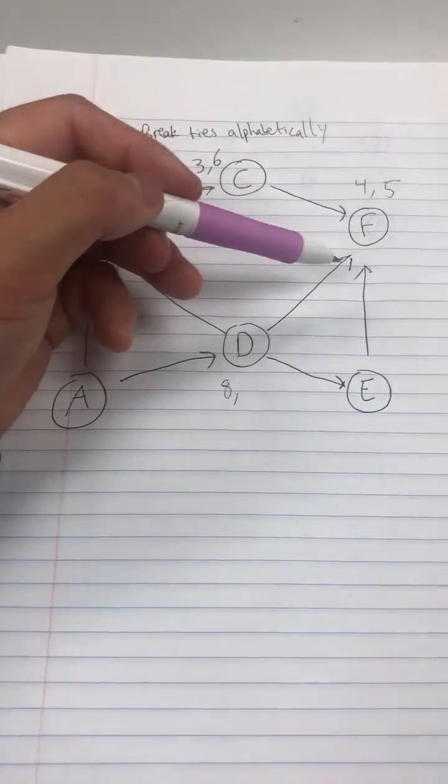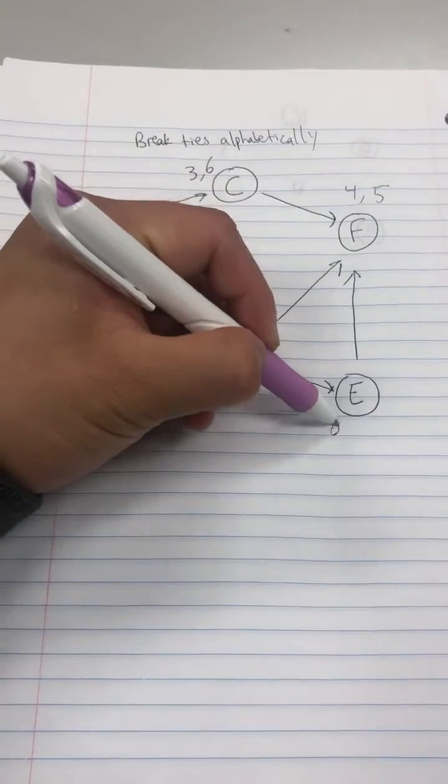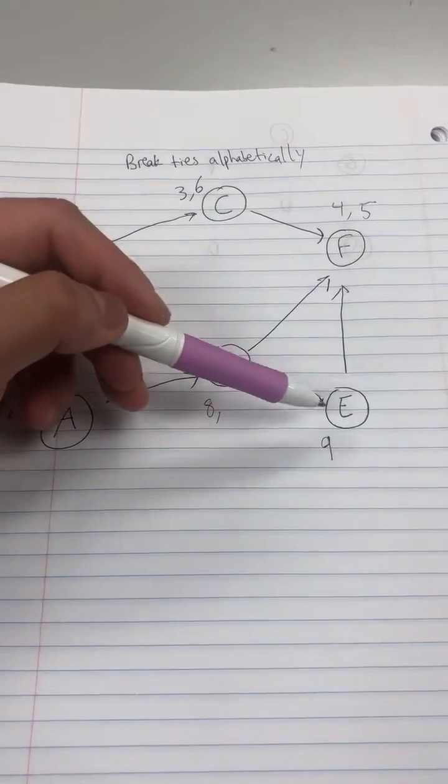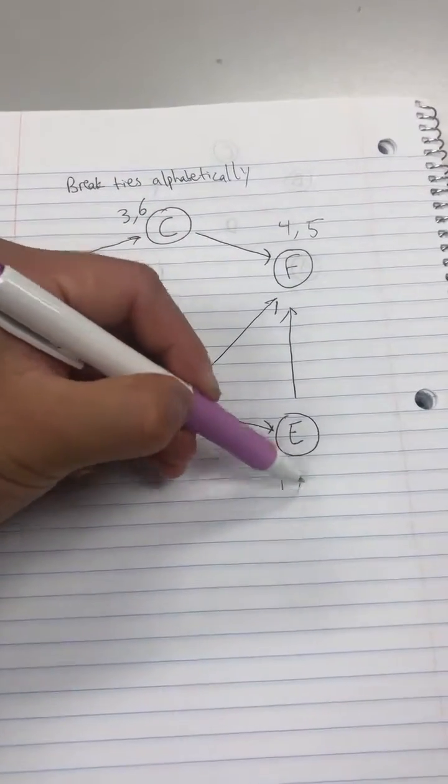F has already been visited, so we're not going to go there. It's going to go to E. So E is going to be nine. E has children F, but it's already visited. So all those children have been visited, so we're going to close this at ten.